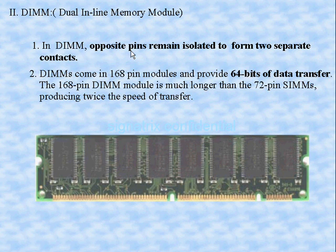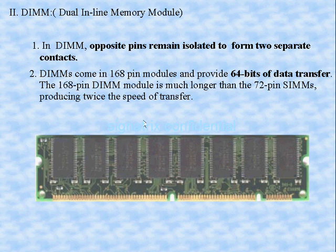The second type of memory module is DIM, which stands for Dual Inline Memory Module. Looking at the diagram, you can see many memory chips on the module. In DIM, the electrical contact on opposite sides of the board remains isolated, forming two separate electrical contacts — unlike SIM where opposite pins are tied together.